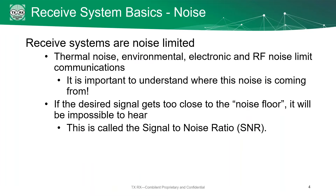The first thing to understand about your receive system is that all receive systems are noise limited. There's a lot of noise out in the real world — thermal noise, environmental noise, electronic and RF noise from other people's radios. It's important to understand where all this noise is coming from. The goal is to make sure that the desired frequency gets through, but if it's too close to the noise floor, it'll be impossible for your system to hear it. This is called the signal-to-noise ratio — we want to keep that signal above the noise floor.